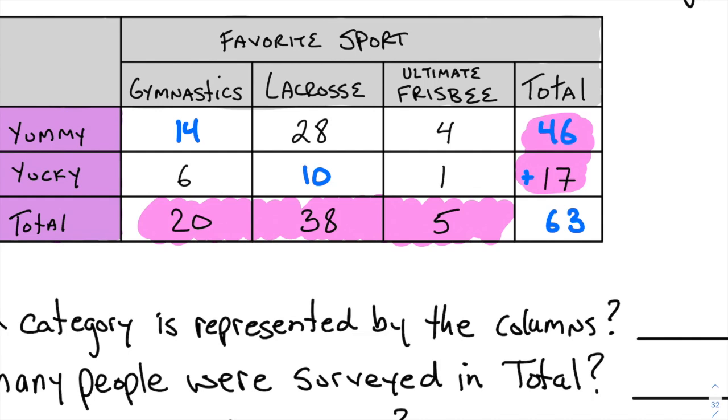As a double check, these two numbers should equal 63, and these numbers should also equal 63. Let me check: 20 plus 38 is 58, plus 5 is 63. So it works. That's just a nice way to double check that there's no error.